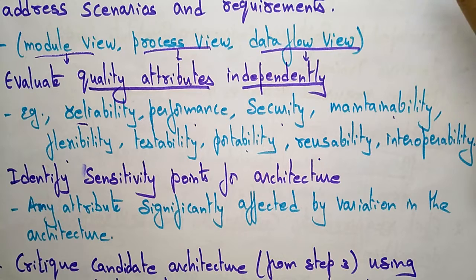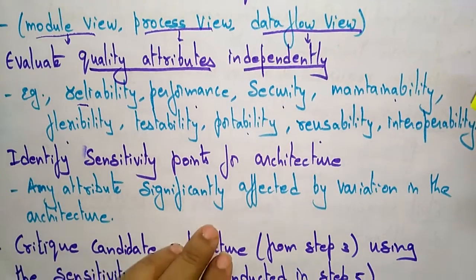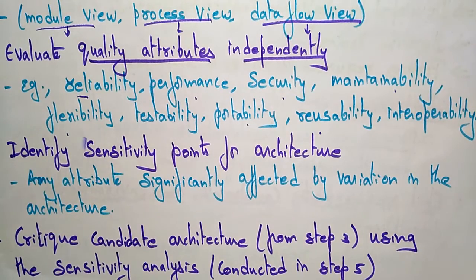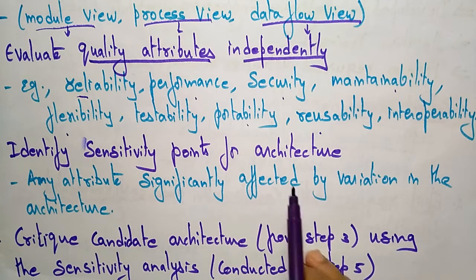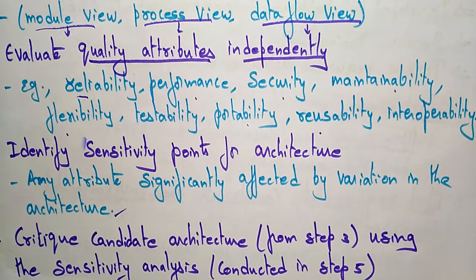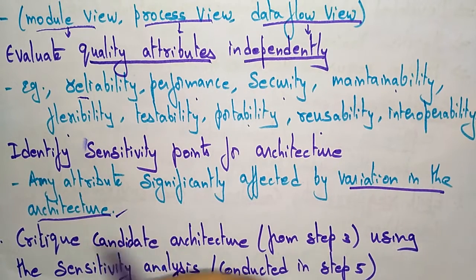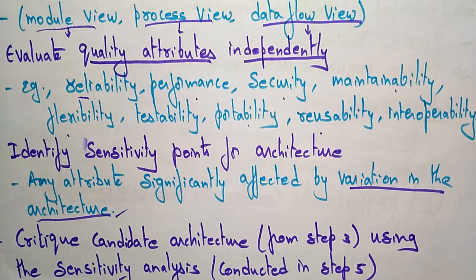We designed the architecture styles and evaluated the quality attributes independently in each scenario. After that, we have to identify the sensitive points for the architecture. Any attribute significantly affected by variation in the architecture represents a sensitive point. These sensitive points may lead to a disturbance — either positive or negative. You need to identify what the sensitive points are for each view: module view, process view, and data flow view.